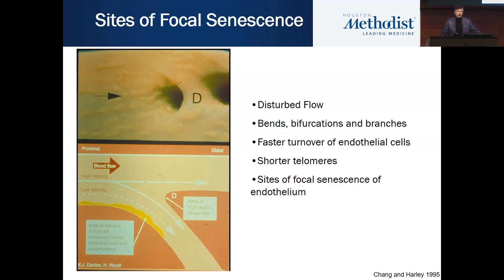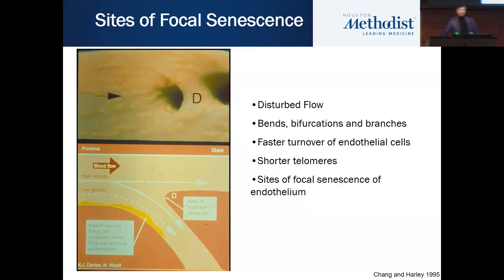Chang and Hurley showed that at those sites, the telomeres were shorter. They looked at endothelial cells of the internal mammary artery and found those telomeres were longer than at sites of bends and branches. At the aortic bifurcation, the endothelial cells had much shorter telomeres — in human patients, human vasculature. They found sites of focal senescence. This idea that certain areas of our body age faster is also familiar from actinic skin damage or smoking-related facial aging.